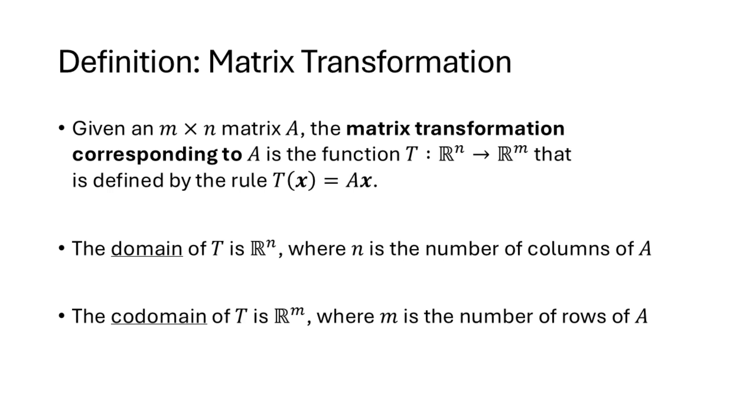Specifically, in this lecture, we're going to be talking about something called a matrix transformation. So when we have an m by n matrix A, the matrix transformation corresponding to A is the function whose domain is Rn and whose codomain is Rm, and it's defined by the rule that t of the vector x, t of x, is A times x. And the domain of t is Rn, where n is the number of columns of A. And that's because for A times x to be defined, for us to be able to plug a vector x into this function, the number of entries in the vector x has to match the number of columns of A.